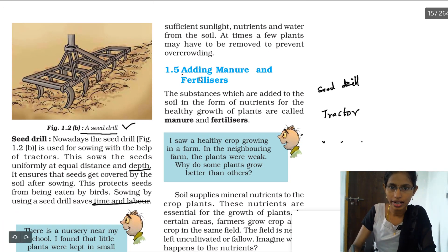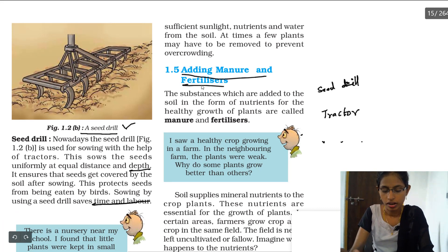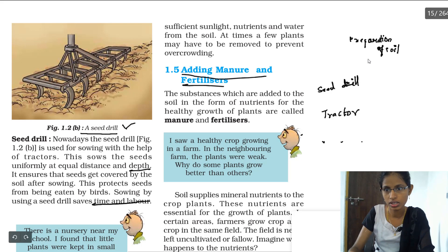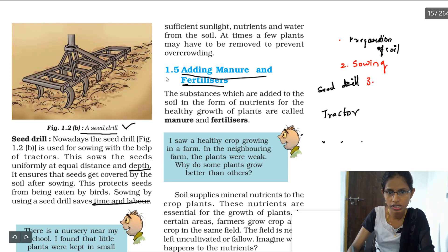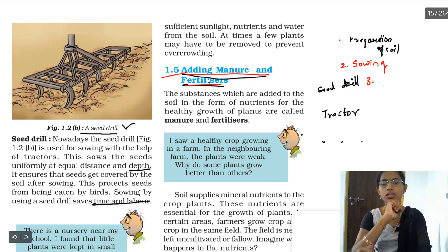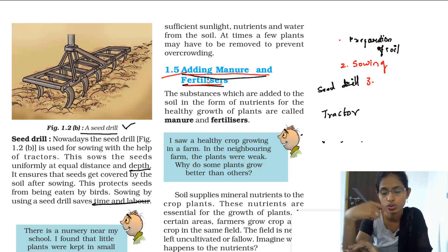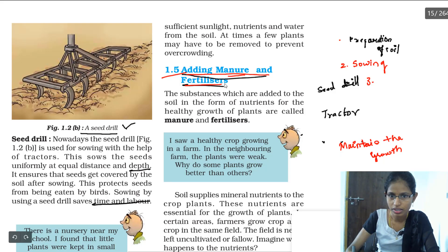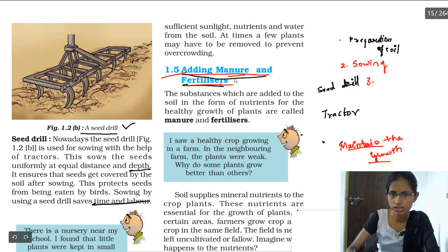Next we are going to see adding manure and fertilizers. So far we have learned: first, preparation of soil; second, sowing the seeds; and now third is adding manure and fertilizers. The reason we add manure and fertilizers is to maintain the growth of plants.